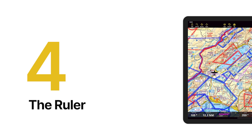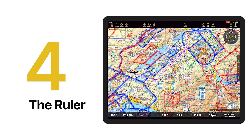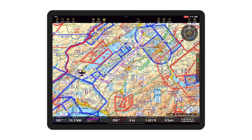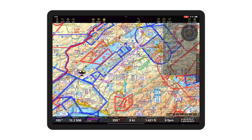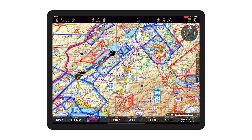Tip number four. Also on the tools menu you can activate the ruler to measure distances on the map. An even quicker way: just place two fingers on two separate points on the map and the ruler will appear automatically.